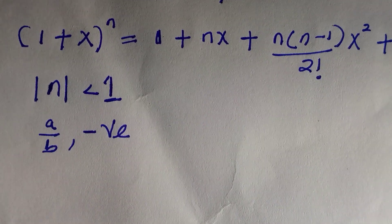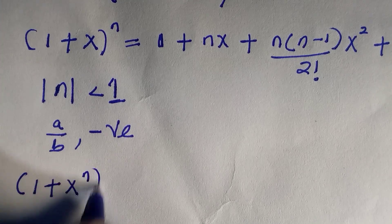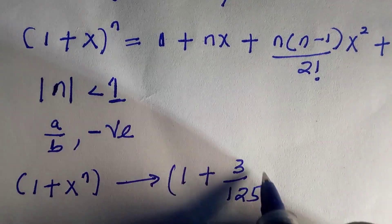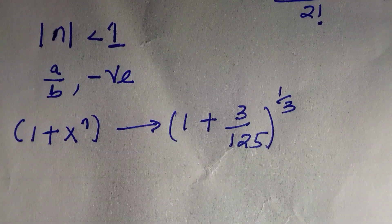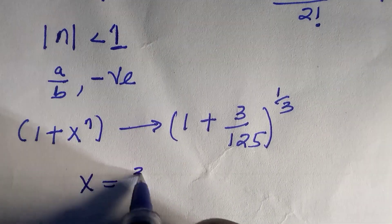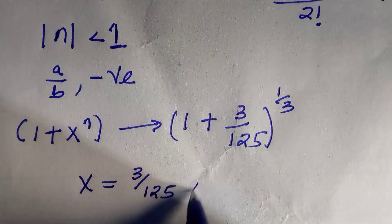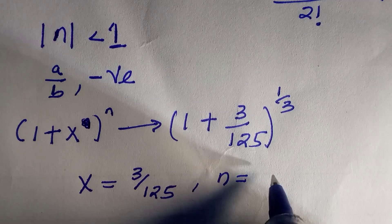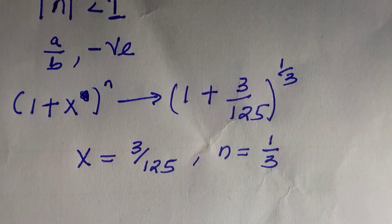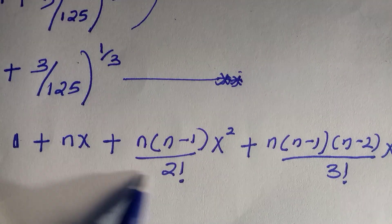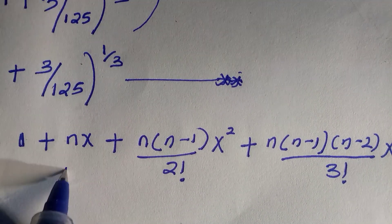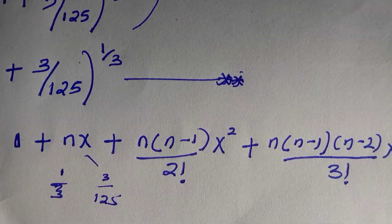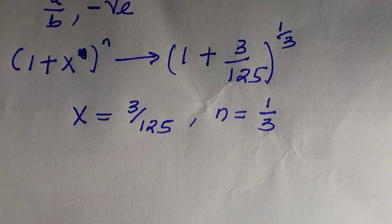Applying this to the bracket (1 + 3/125) raised to the power of one over three, we compare with (1 + x)^n and identify x equals 3 divided by 125, and n equals one divided by three.